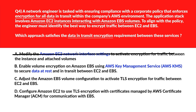Option B says: enable volume encryption on Amazon EBS using AWS Key Management Service (AWS KMS) to secure data at rest and in transit between EC2 and EBS. AWS KMS encrypts data at rest on EBS volumes, not during transit between EC2 and EBS. Now move to C.